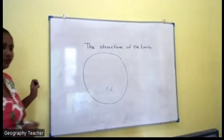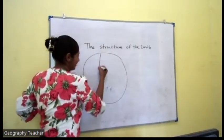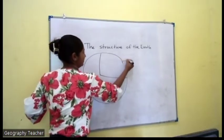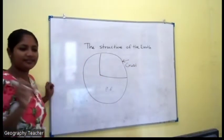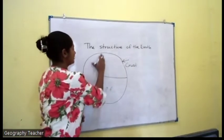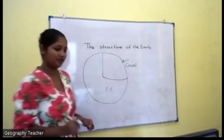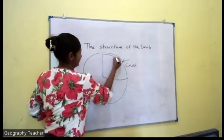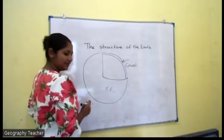Draw a circle to represent the Earth. In this Earth there are three main layers. The first layer, the surface layer, is the crust. It's very thin when we compare it with the other layers of the Earth. This crust is a very thin layer — it's about 5 kilometers to 60 kilometers.